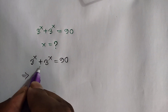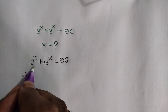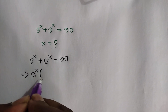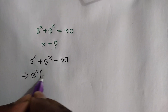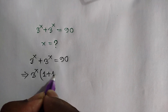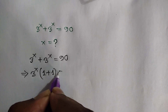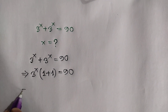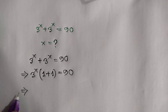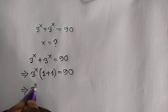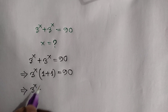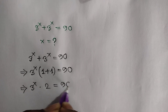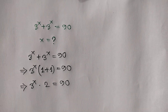Here, taking common 3 to the power x, we can write 3 to the power x bracket 1 plus 1 is equal to 90. Or, 3 to the power x times 2 is equal to 90.